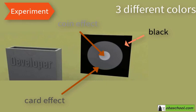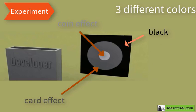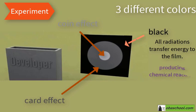This means that different materials absorb different kinds of radiation. So, all radiations transfer energy to the film, producing a chemical reaction and turning the film with gradient colors of black.